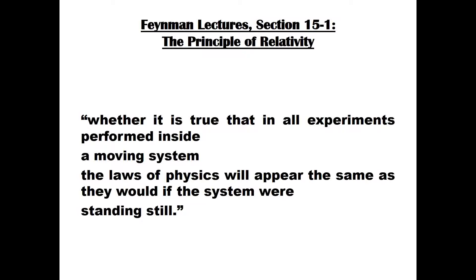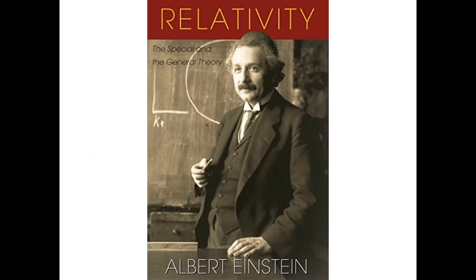Welcome to part two of this series. We left part one at a point where Einstein was preparing to challenge the principle of relativity. He will ask the same question as that expressed by Richard Feynman: whether it is true that in all experiments performed inside a moving system, the laws of physics will appear the same as they would if the system were standing still. To consider this question, Einstein will conduct a series of thought experiments using two coordinate systems.